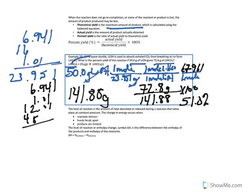The heat of a reaction is the amount of heat absorbed or released during a reaction at constant pressure. The change in energy happens when reactants interact, from bonds breaking apart, bonds forming, and products being made. The heat of a reaction, or enthalpy change — delta H — is the difference between the enthalpy of the products and the enthalpy of the reactants.